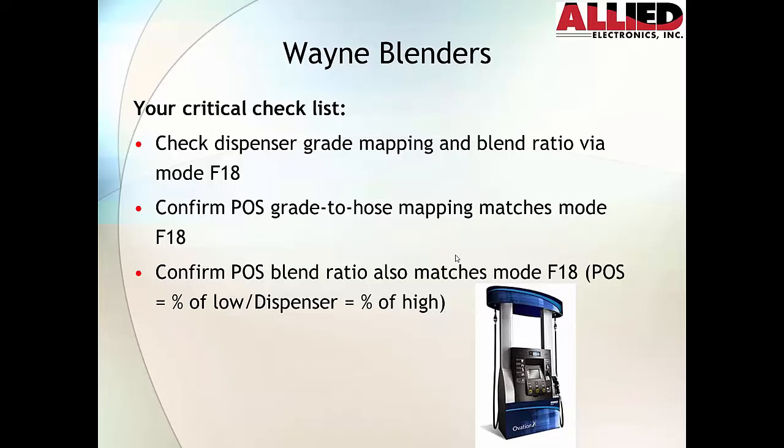One thing you need to be aware of is when we get the blended product from the dispenser, it's going to give us the blend of high. So for example, if the dispenser comes back and tells us that the blended ratio over the blended product is 30, that means when we go to program it in the point of sale, it's going to be the inverse — it's going to be 70.